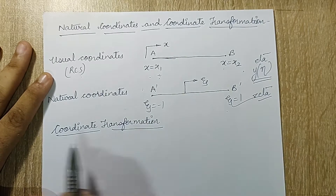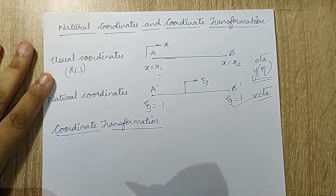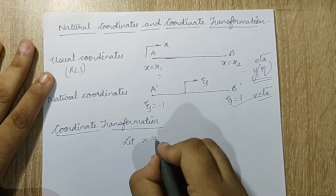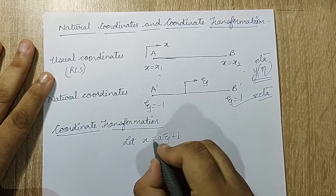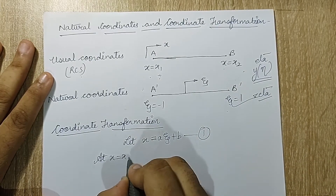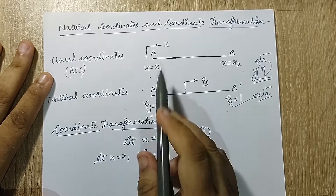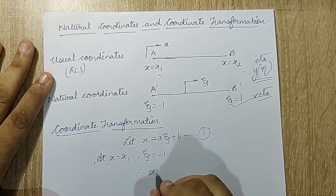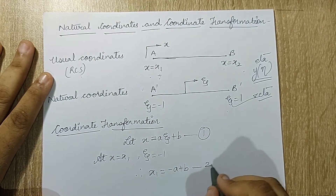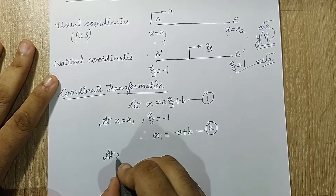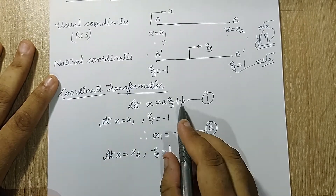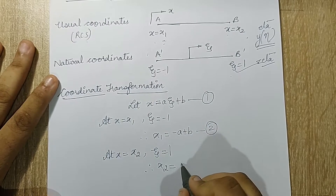Now we will see how to transform the coordinates from rectangular to natural coordinate system. Let me assume x = aζ + b — this is equation 1. At x = x₁ we have ζ = -1, therefore x₁ = -a + b — this is equation 2. Then at x = x₂, ζ = +1, therefore x₂ = a + b — this is equation 3.